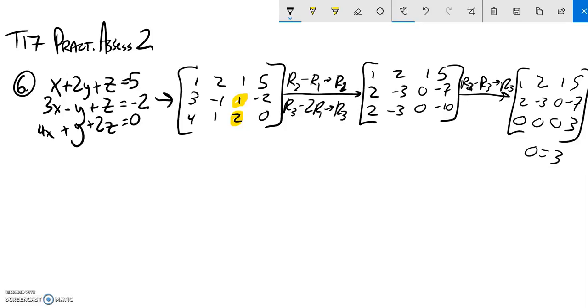So now I have this statement: 0 equals 3. Nonsense. No solution.